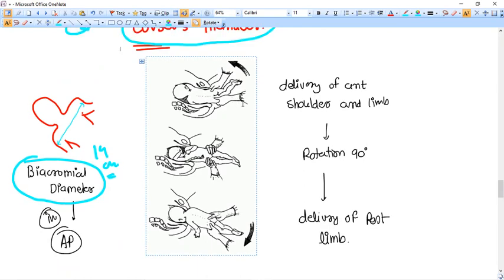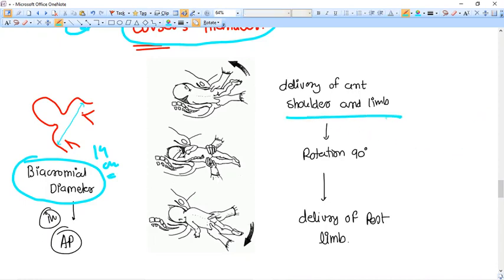What is the principle? The principle is the AP diameter of the outlet is maximum. Whenever we talk about pelvic outlet, the AP diameter is maximum. So what we should do, we just rotate the baby by 90 degrees. For example, if the fetus comes out and then you rotate 90 degrees, so that the biacromial diameters come into the anterior posterior diameter of the pelvis. Then you extract one shoulder and one upper limb.